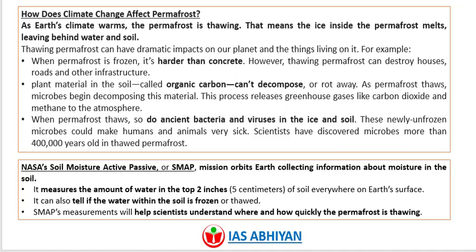How does climate change affect permafrost? As Earth's climate warms, permafrost is thawing — meaning the ice inside melts, leaving behind water and soil. Thawing permafrost can have dramatic impacts on the planet. When permafrost is frozen, it is harder than concrete; however, thawing permafrost can destroy houses, roads, and other infrastructure. The plant material in the soil, called organic carbon, cannot decompose while frozen, but as permafrost thaws, microbes begin decomposing this material, releasing greenhouse gases like carbon dioxide and methane.